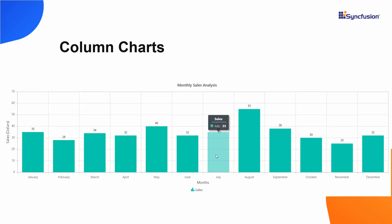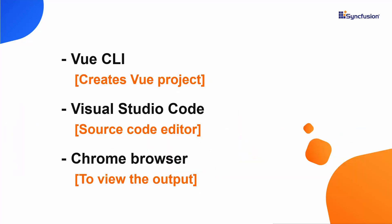There are over 30 Syncfusion chart types available to use in Vue, but I am going to use the column chart and show you how to enable a few of its basic features. In this video, I will show you the steps to create a Vue project using the VueCLI tool, edit my code using Visual Studio Code, and finally view the output result on any of the supported browsers.